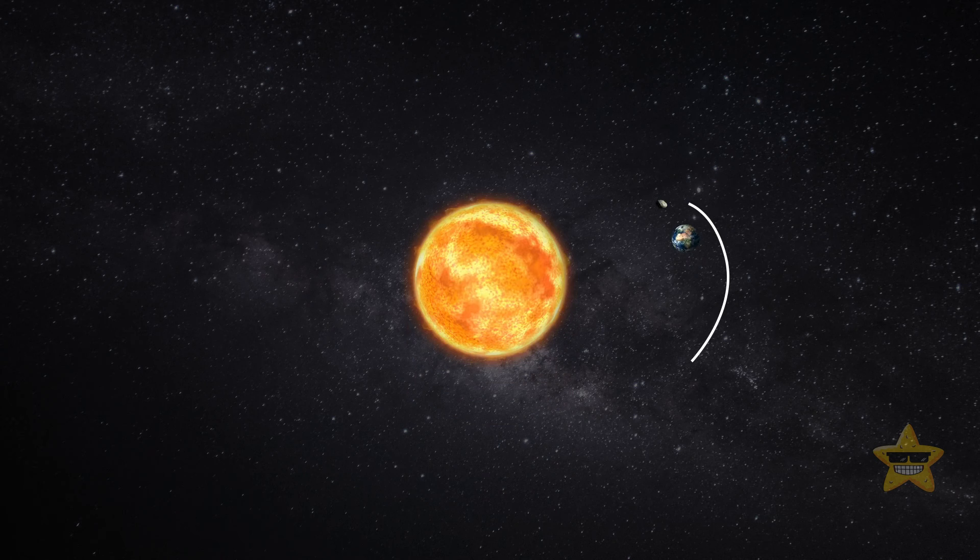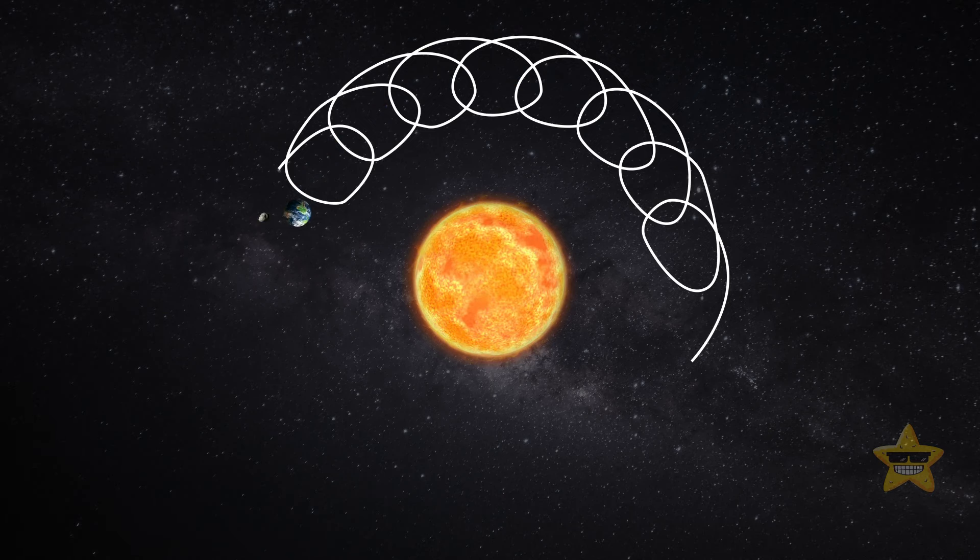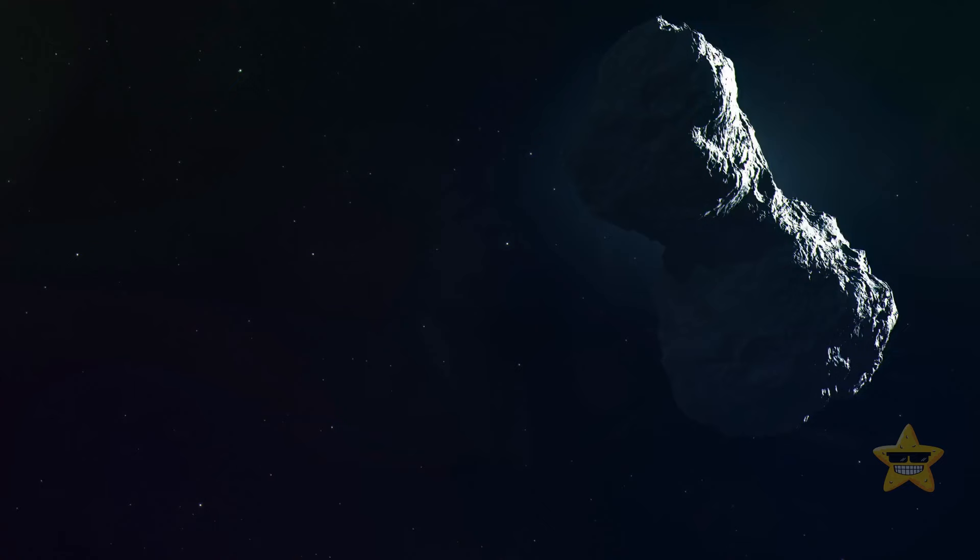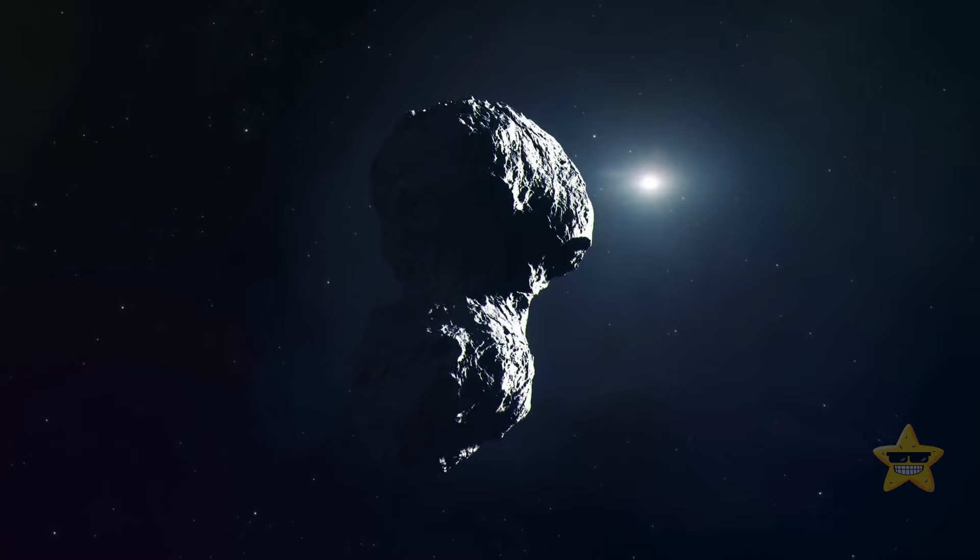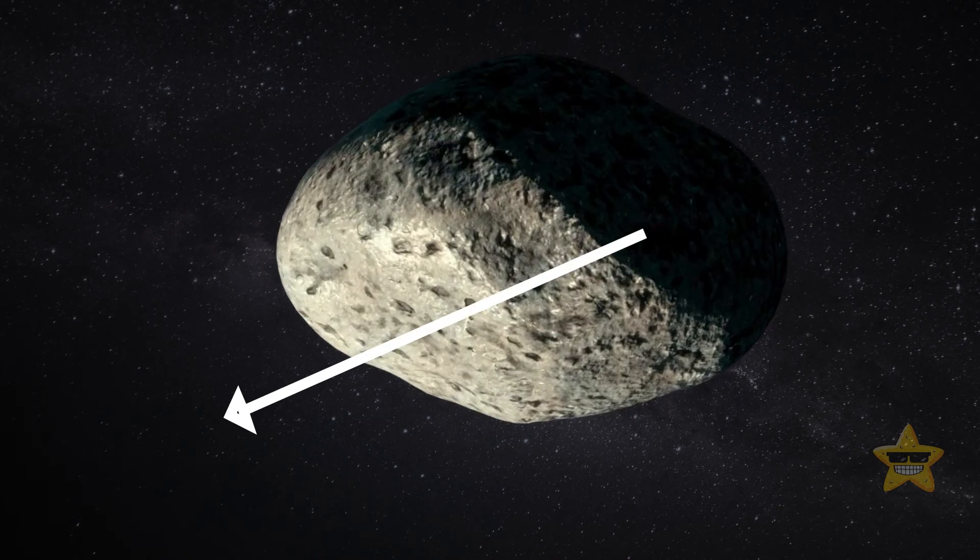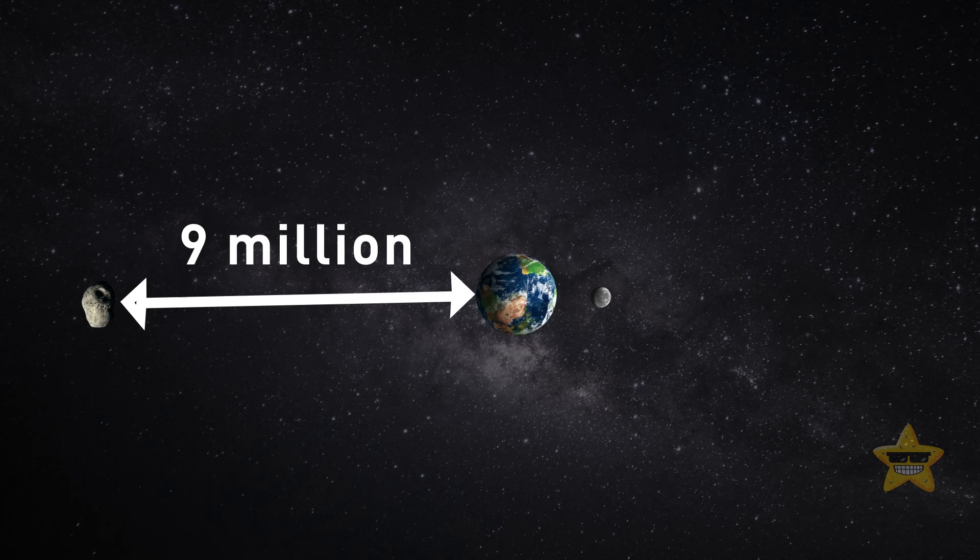The asteroid was named 2023 FW13, and instead of simply orbiting our planet like the moon does, it orbits the sun. But its orbit is so unusual that it causes the asteroid to circle Earth too, keeping it in roughly the same area as our planet. Even though it doesn't orbit it directly. You've probably already realized that 2023 FW13 isn't the kind of moon where we could send a mission. It's way smaller and farther away than our natural satellite. The newly found space object is a mere 50 feet across and is floating 9 million miles away. And that's when it's the closest to Earth.